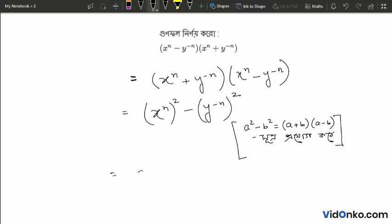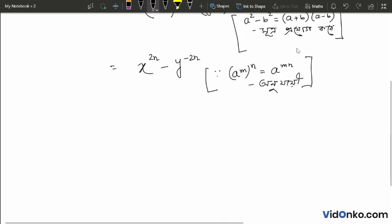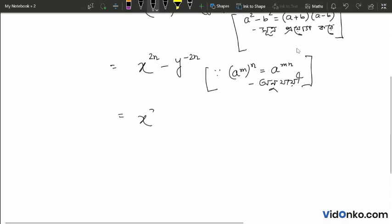I am going to write x to the power 2n minus y to the power minus 2n.